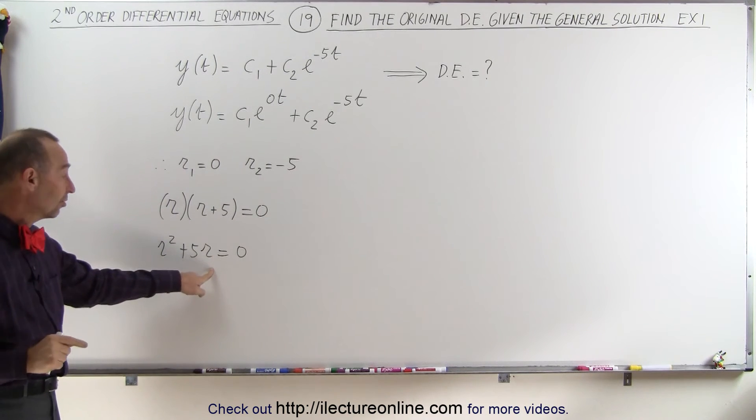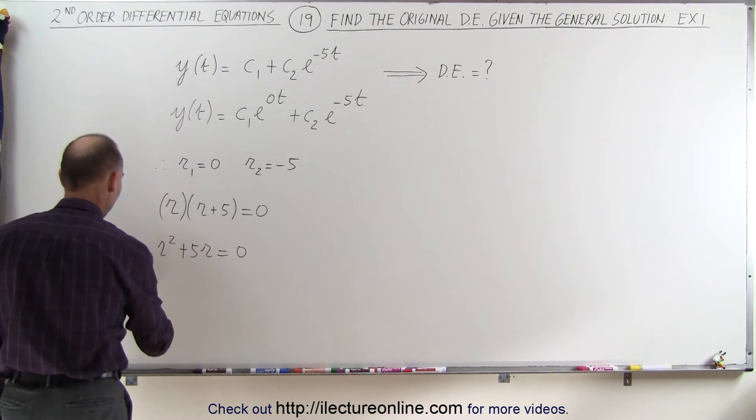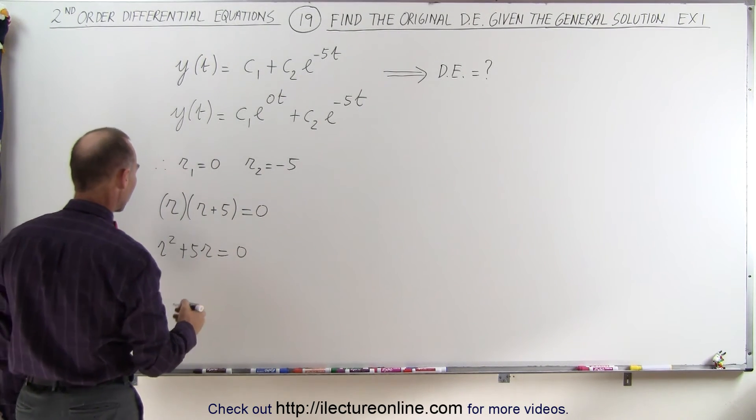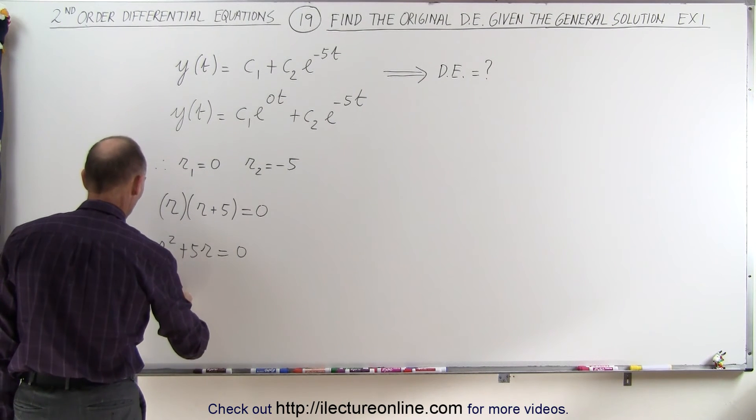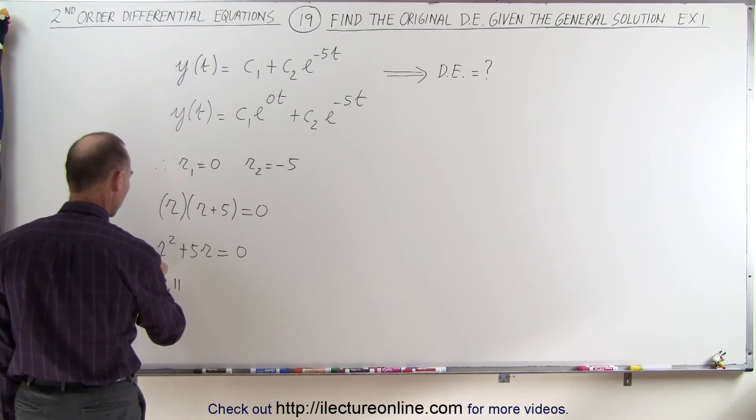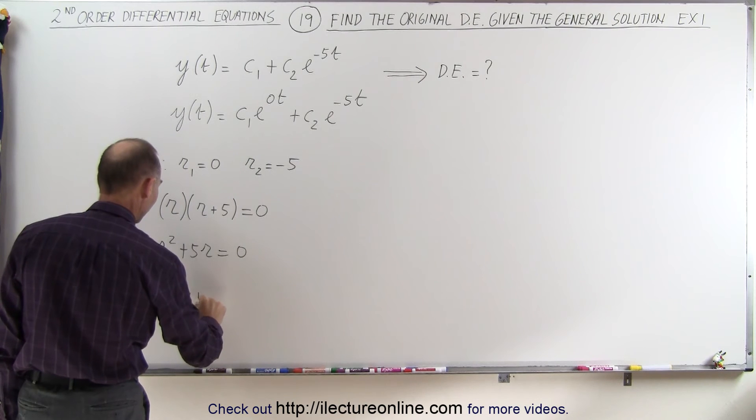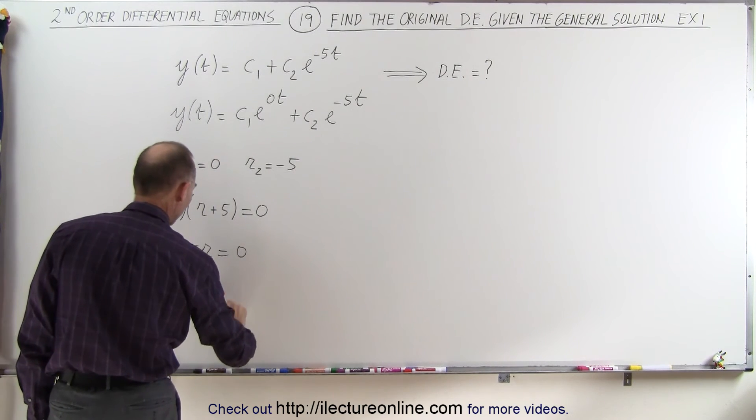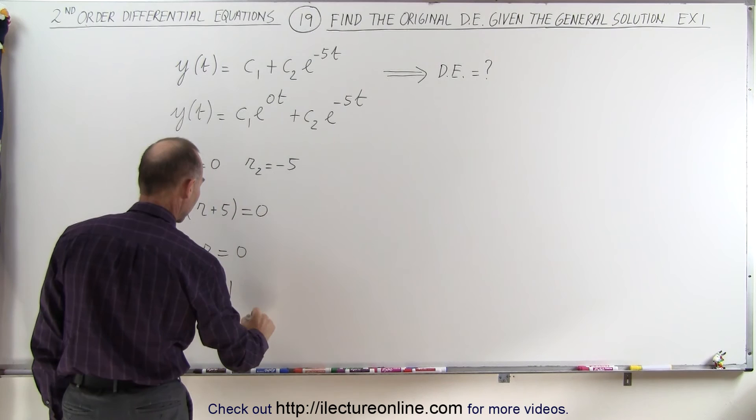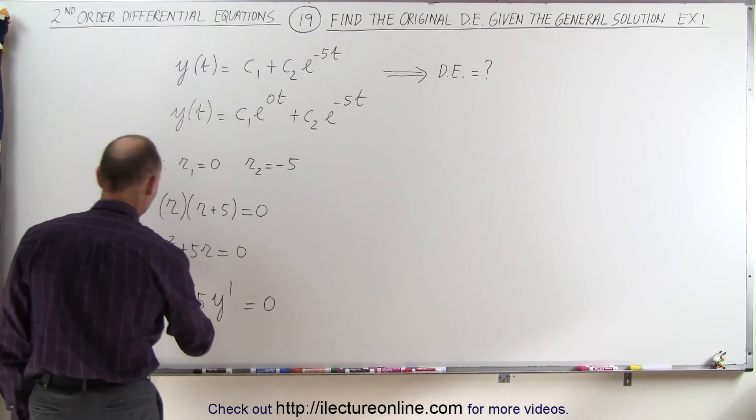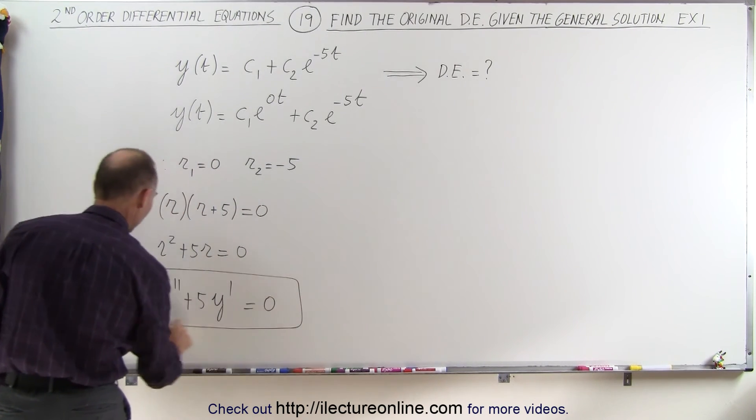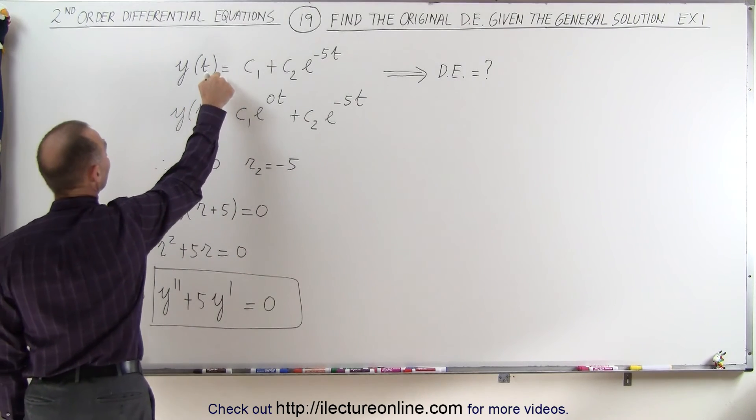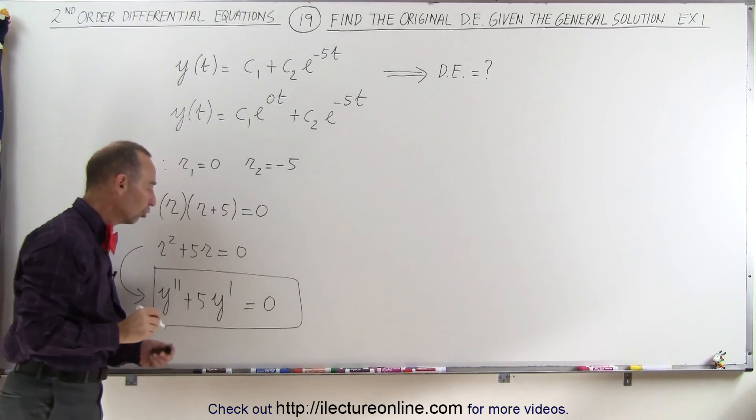Notice that the constant term is missing, and now we can take this and turn it into the differential equation. So this becomes the y double prime term with no coefficient, plus 5 times y prime plus 0 times y equals 0. And therefore, this is the differential equation that results in this general solution.